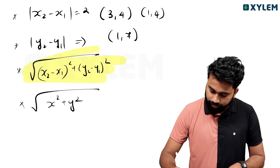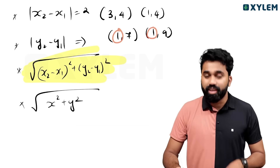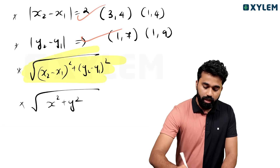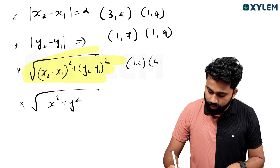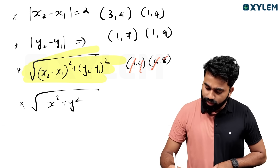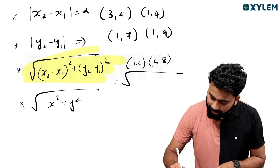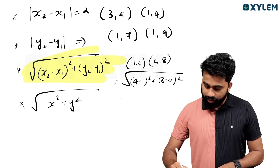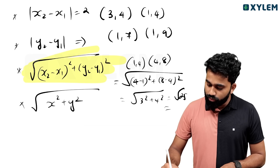Now, if the x-coordinates are the same, you use y2 minus y1. For (1,4) and (4,8): x is the same. The distance equals root of (4 minus 1) squared plus (8 minus 4) squared, that is root of 3 squared plus 4 squared, that is root of 25, that is equal to 5.